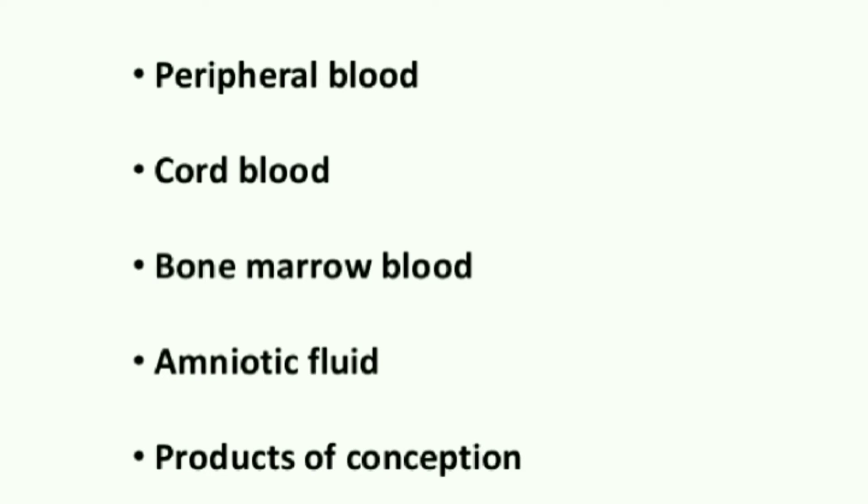Next, let us discuss the types of samples from which karyotyping can be done. These include peripheral blood, bone marrow blood, amniotic fluid, and products of conception.